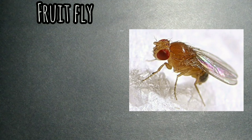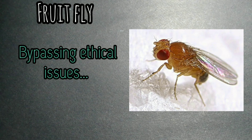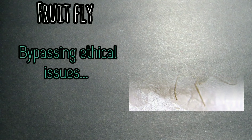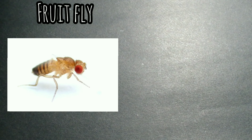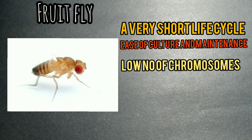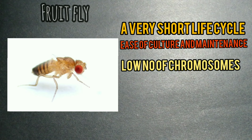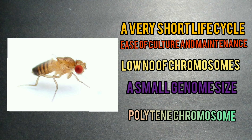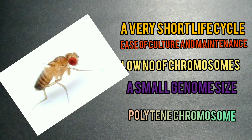Studying these genes in Drosophila lets scientists bypass some of the ethical issues of biomedical research involving human subjects. The fruit fly has many practical features that allow scientists to carry out research with ease: a very short life cycle, ease of culture and maintenance, a low number of chromosomes, a small genome size in terms of base pairs, but giant salivary gland chromosomes known as polytene chromosomes. Let's explore these advantages and then dive into how the fly has helped us understand a wide range of human conditions.